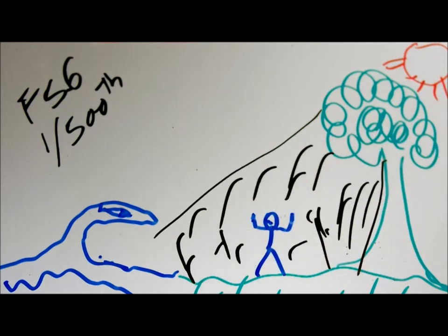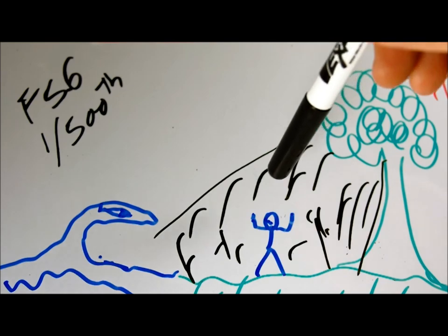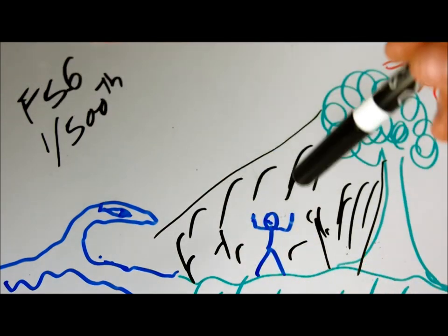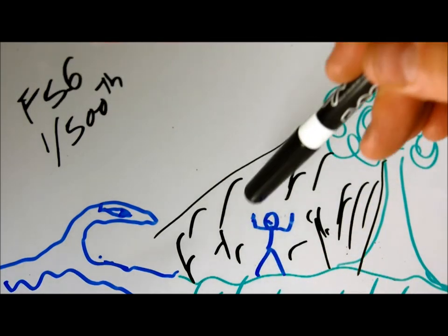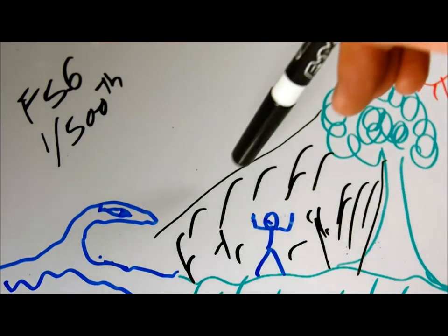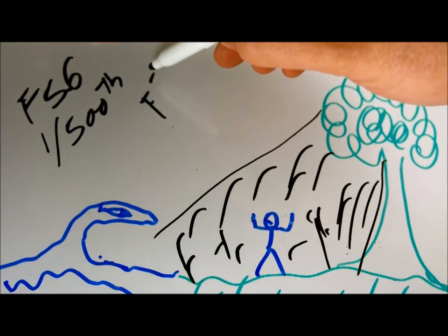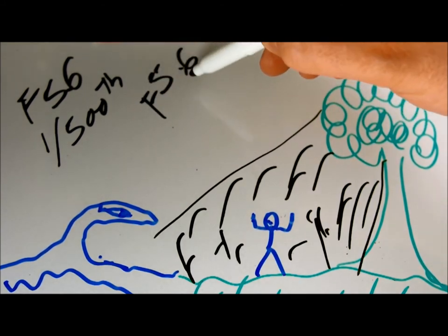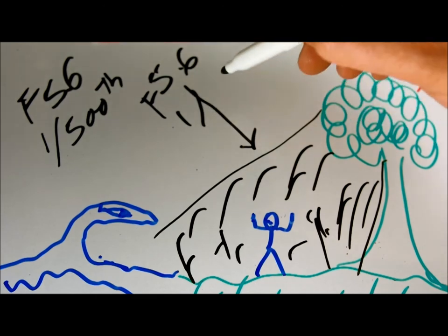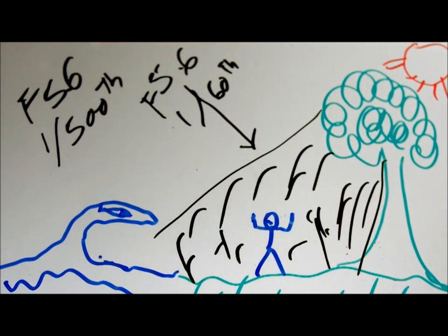So to compensate for that, what you want to do is shift your camera over to this shaded area and meter off of this shaded area. And that's going to give you something more like f5.6 at 1/60th or 1/125th—say 1/60th.